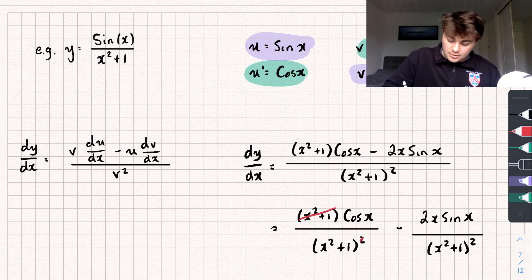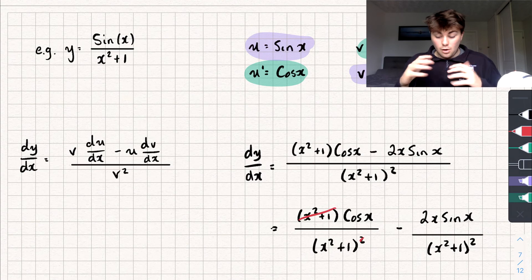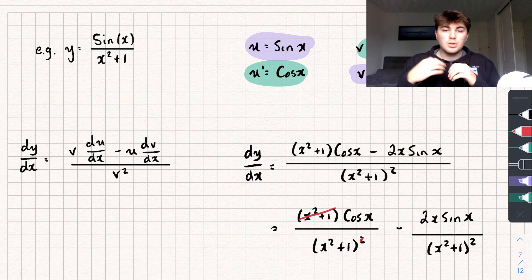And then you can see that this cancels with that. And so we get the derivative is equal to cos x over (x squared plus 1) minus 2x sine x over (x squared plus 1) all squared. So hopefully this video was useful. If it was, like it, subscribe and share it. And thank you for watching.